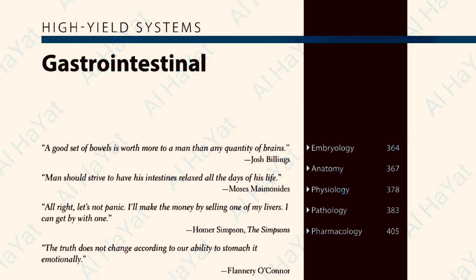Tracheoesophageal anomalies: esophageal atresia with distal tracheoesophageal fistula is the most common type, representing 85% of cases. It often presents with polyhydramnios in utero due to the fetus's inability to swallow amniotic fluid. Neonates drool, choke, and vomit with the first feeding. Tracheoesophageal fistulas allow air to enter the stomach, visible on chest x-ray. Cyanosis is secondary to laryngospasm to avoid reflux-related aspiration. A clinical test is failure to pass a nasogastric tube into the stomach.